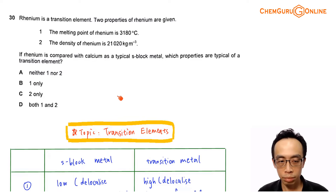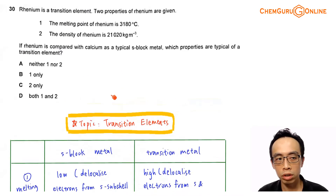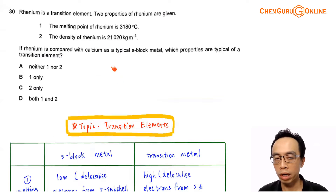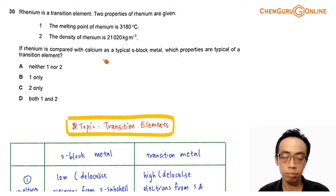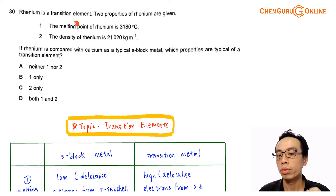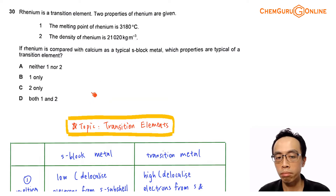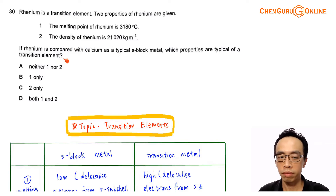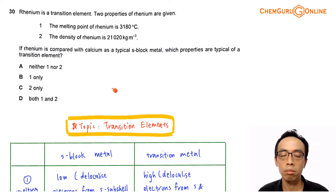The topic tested in this question is under transition elements. We want to keep in mind that even though the question talks about rhenium and calcium, we are not comparing a specific transition metal versus a specific S-block metal. We are using calcium as an example of an S-block metal, and rhenium as an example of a transition element. So we are interested in the typical or common properties of a transition element.